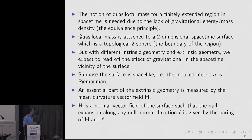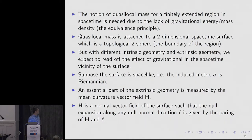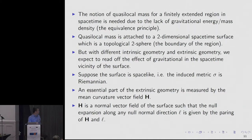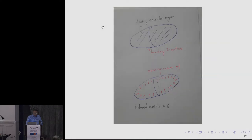What kind of data are we gathering? We assume the surface is space-like, and therefore we get a Riemannian metric on the surface. Regarding the extrinsic geometry, we take the geometric quantity called the mean curvature vector field — it is the one used to measure the null expansion. For example, you take any null normal vector field, and if you want to look at the null expansion, you just pair with this vector field. So this is the normal vector field that contains all the information of null expansion.